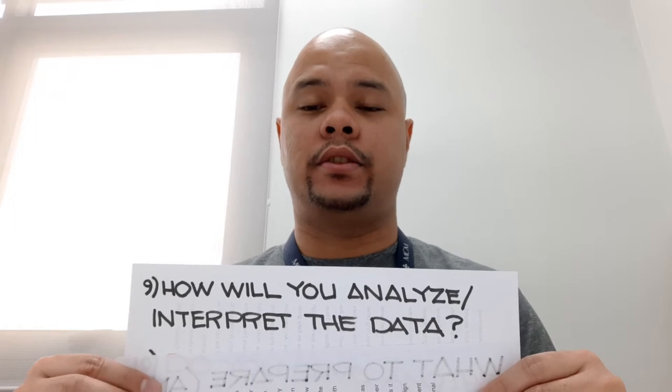Question number nine: how will you analyze or interpret the data? You are still going to have to analyze data and sift through the statements of your participants and arrange them thematically — it's a thematic approach. For quantitative research, you simply have to identify the statistical approach or the statistical tool you're going to use in order to interpret your data. But for qualitative research, it's a whole different ballgame. Most of the time they use a thematic approach — from the transcription they are going to identify common themes that emerge from the responses of your participants, arrange those themes, and then try to associate the related literature to the responses under those emergent themes.